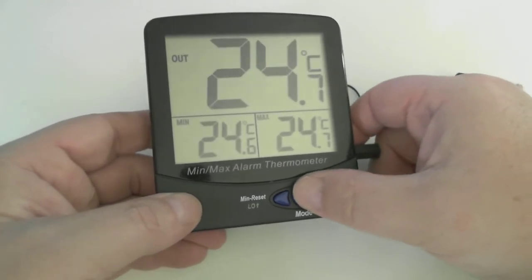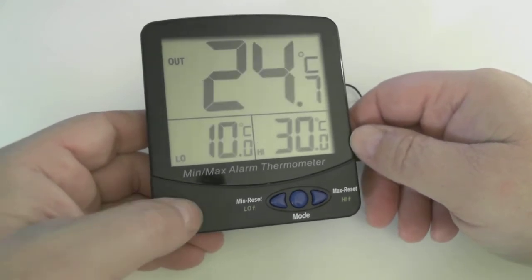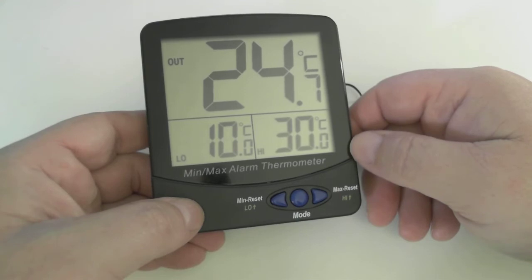To set your alarm set points, hit mode. You're now in the alarm setting screen. You currently have a low temperature of 10 degrees C and a high temperature of 30 degrees C.